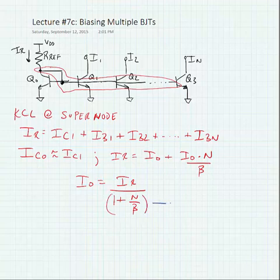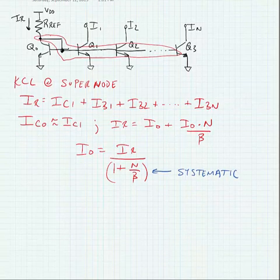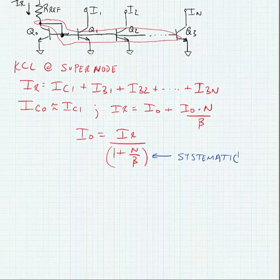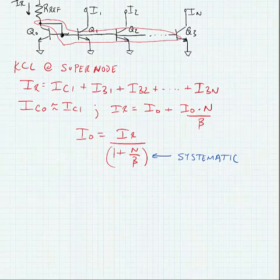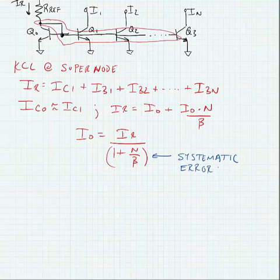Now, this is what we call a systematic error. We want our output current to equal our reference current, but we note that because we have many bases connected to this, the systematic error is growing. And of course, the larger we make N, in other words, the more connections we make, the larger the systematic error is.